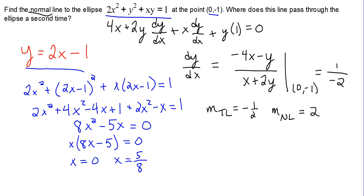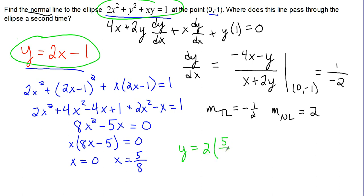All we have to do is look at x equals 5 eighths and plug it back in to find y. We have two equations we could use — the ellipse equation or the linear equation — and since they intersect at that point it doesn't matter which we use. It seems a lot easier to use the linear equation, so y equals 2 times 5 eighths minus 1, or 10 eighths minus 1, which is 2 eighths or 1 fourth. So they intersect a second time at the point (5/8, 1/4).